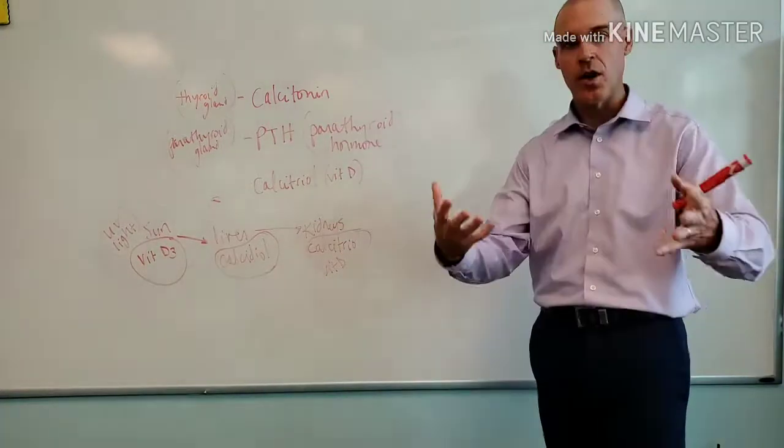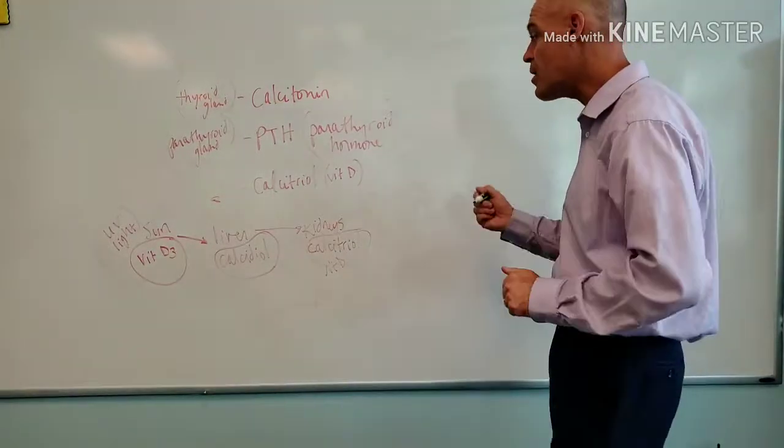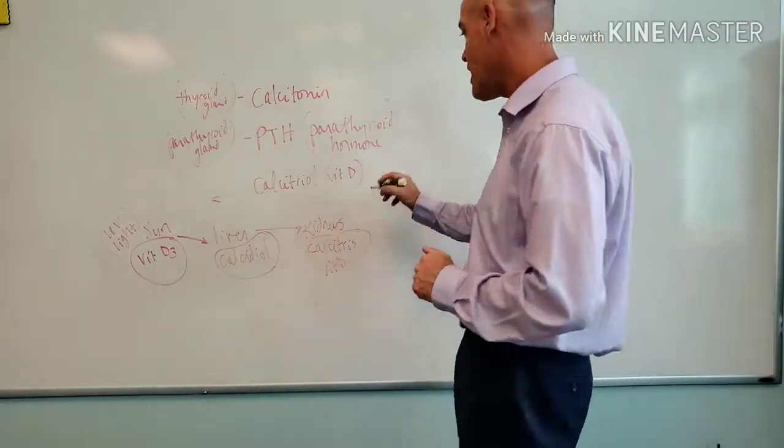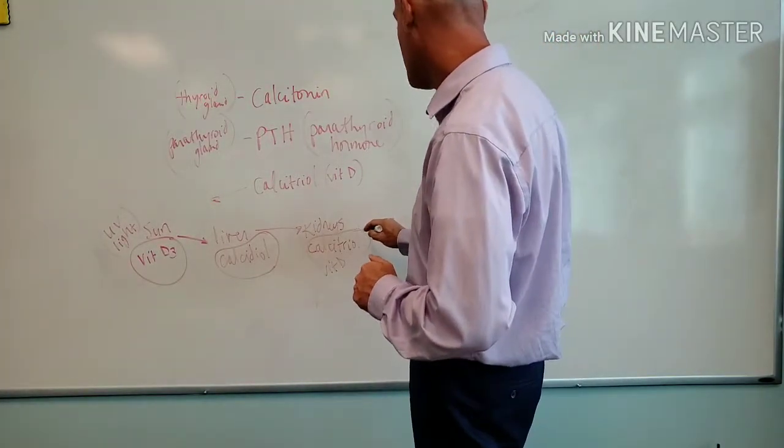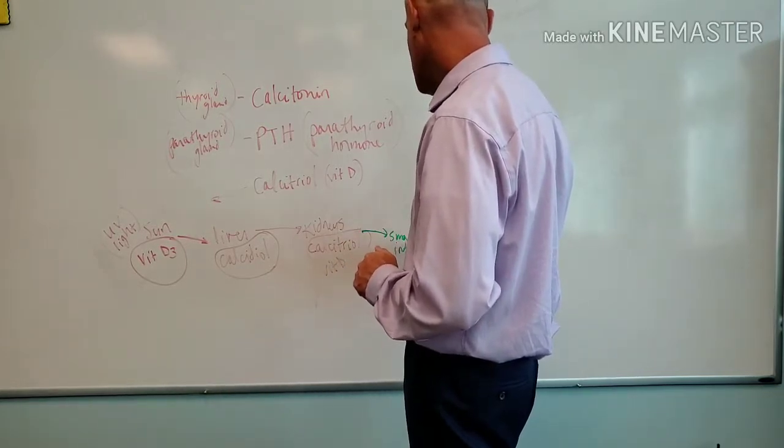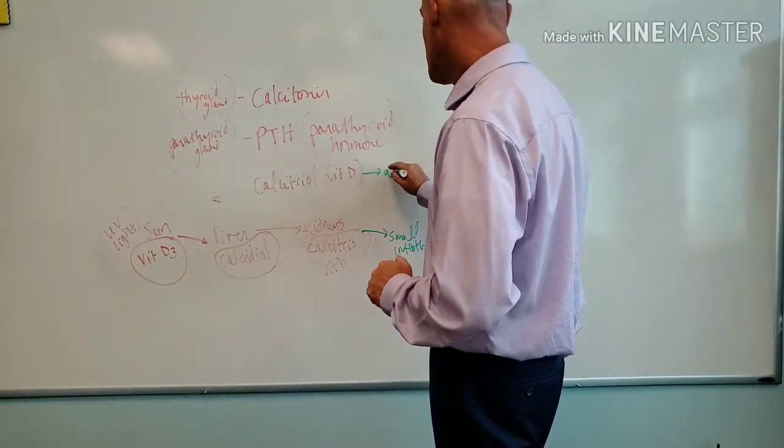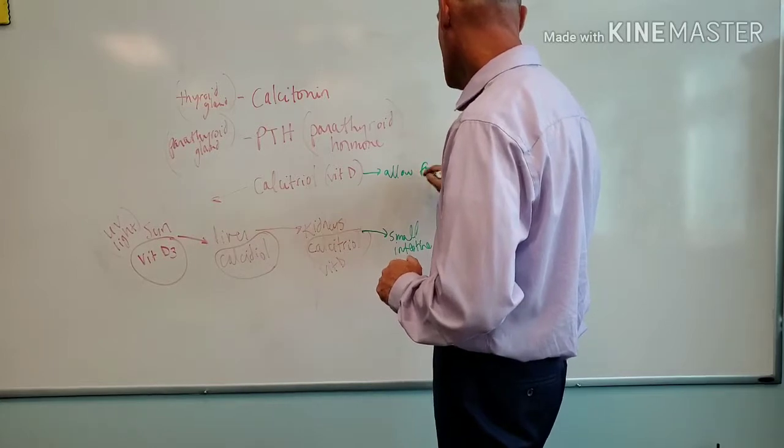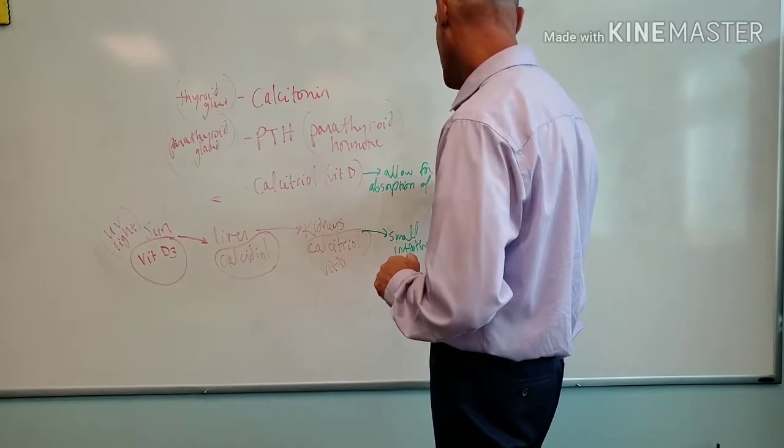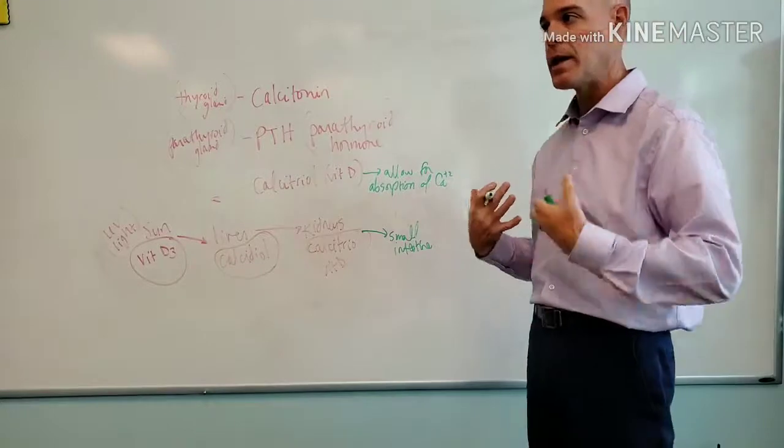Now, the question then is, and we might as well talk about it now, what does vitamin D do for us? Because vitamin D, once we have produced it, it's going to go one more place. It's going to have its action in the small intestine. Where what is it going to do? It's going to allow for the absorption of, of course, calcium.